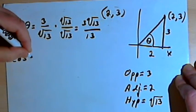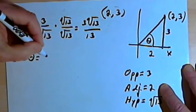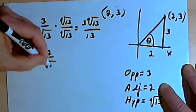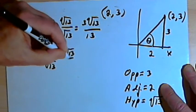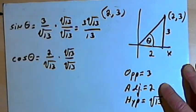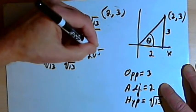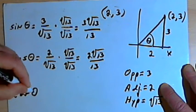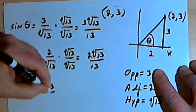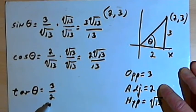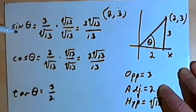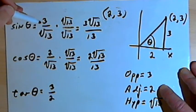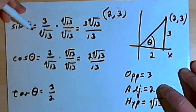For the cosine of theta, we take the adjacent side, which is 2, over the square root of 13, and we do the same trick to rationalize — multiply by the square root of 13 over the square root of 13 — giving us 2 times the square root of 13 over 13. For the tangent, we take the opposite, which is 3, over the adjacent, which is 2, and we can leave it as 3 over 2. For the reciprocal functions — cosecant, secant, and cotangent — we just take the values we got for sine, cosine, and tangent and invert them.